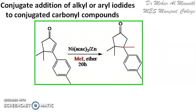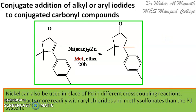These nickel reagents can also help in various other coupling reactions discussed earlier, such as Negishi, Hiyama, Kumada, Stille, etc. — using the nickel system instead of the palladium system. The advantage of using nickel instead of palladium for cross-coupling reactions is that nickel reacts more easily with halides and sulfates.